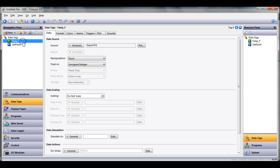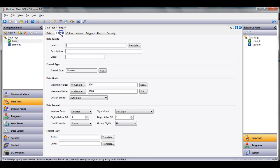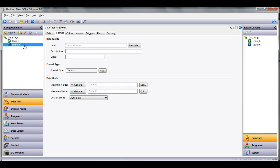If I click on temp F and go to the format tab, I've already got it formatted as a numeric type. I've set it up for three and one, and I've already put a min and max of 600 and 1000, which means 60.0 and 100.0.